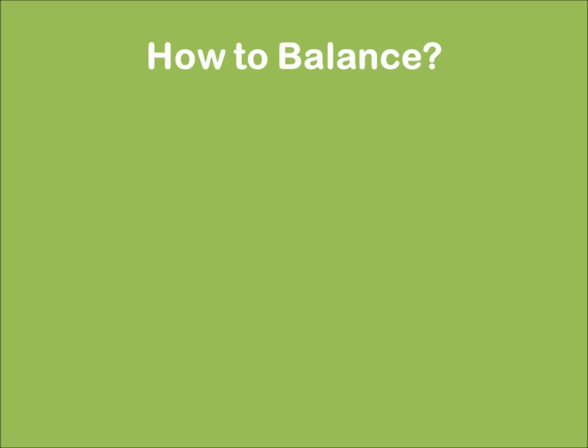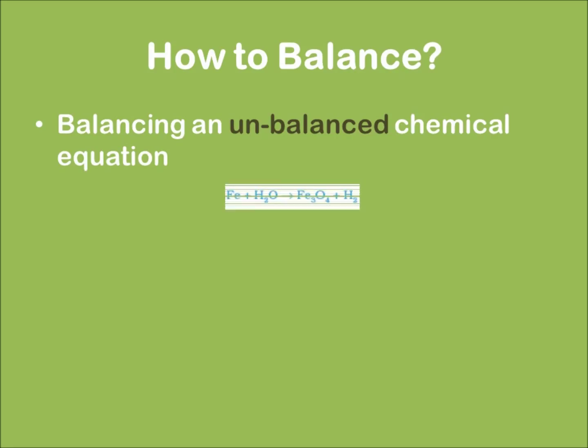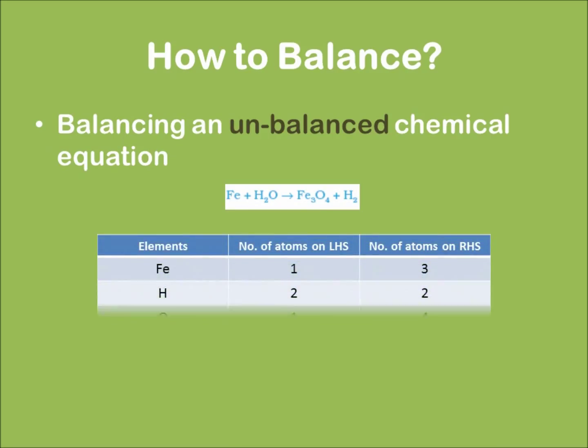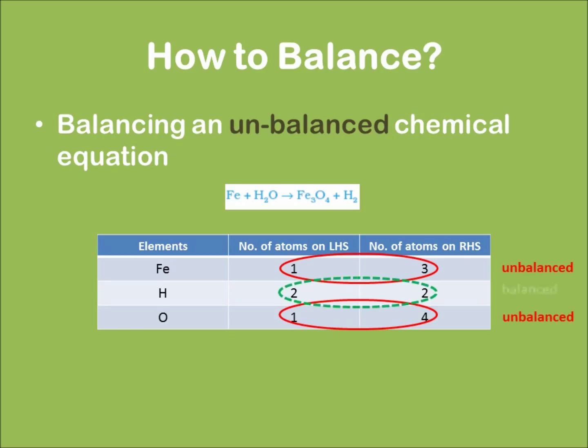Now let's learn how to balance. This job is actually done for an unbalanced chemical equation. Consider the following example. Again, I list the number of elements of each atom in a tabular form. I can clearly see that the number of atoms of hydrogen is the same, but for oxygen and iron, it is not the same. Hence, the given equation is an example of an unbalanced chemical equation. Now let's learn how to balance this given unbalanced chemical equation.